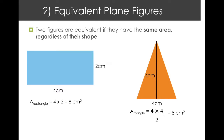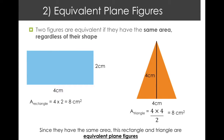Even though these two are not the same type of shape, they have the same area. So because of this, this rectangle and triangle are considered equivalent plane figures.